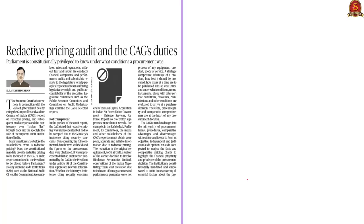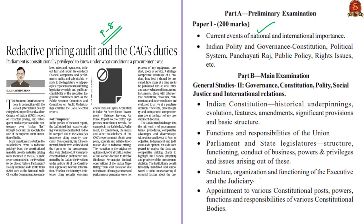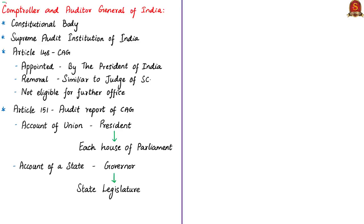The next editorial article appears on page 8 in all editions. It discusses the controversy over pricing details of the Rafale deal being removed from the recent audit report of the Comptroller and Auditor General of India. It is relevant in prelims under current events and Indian polity and governance, and in mains under significant constitutional provisions, functions of the union, powers of parliament, functioning of the executive and judiciary, and functions of constitutional bodies. CAG is a constitutional body established by the Constitution of India and is the supreme audit institution. Under Article 148, the CAG is appointed by the President of India and can only be removed in the same manner as a Supreme Court judge.